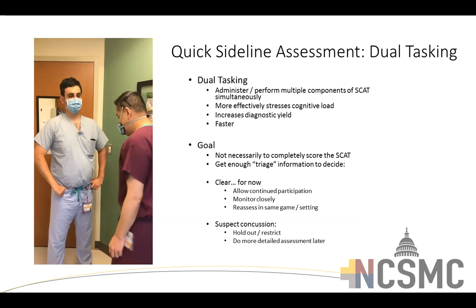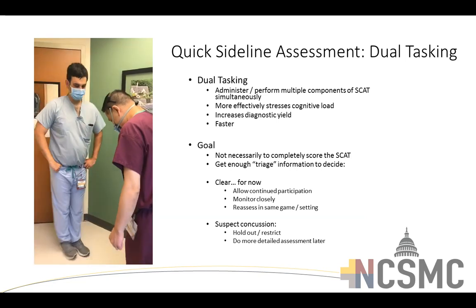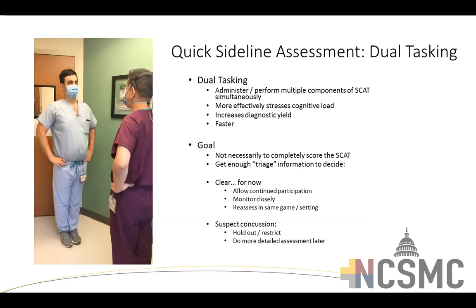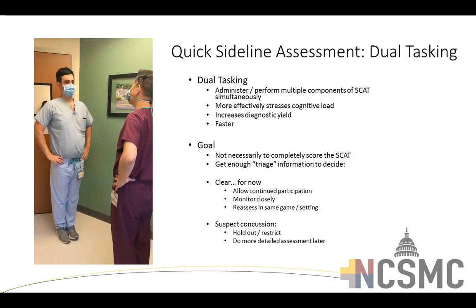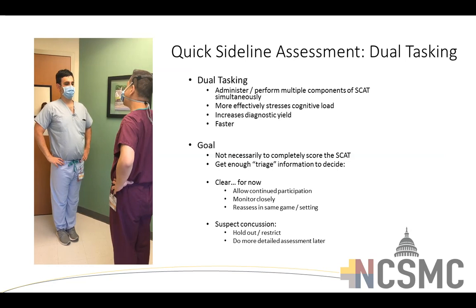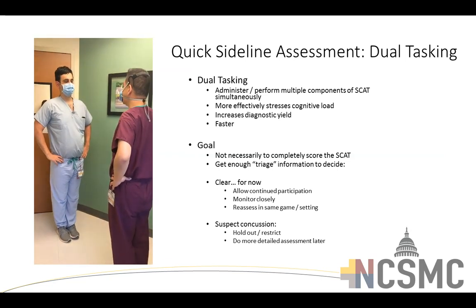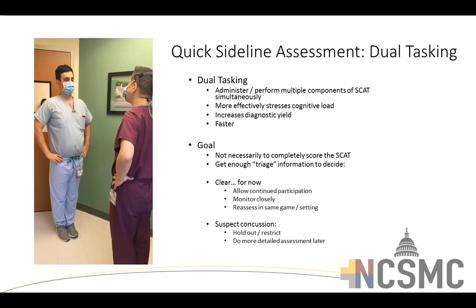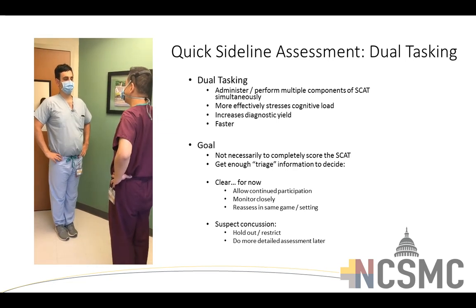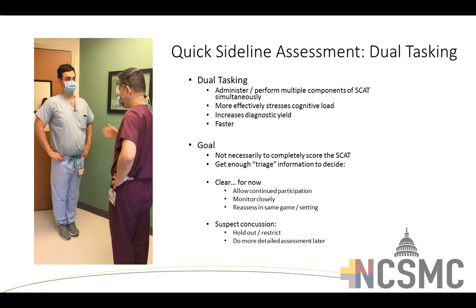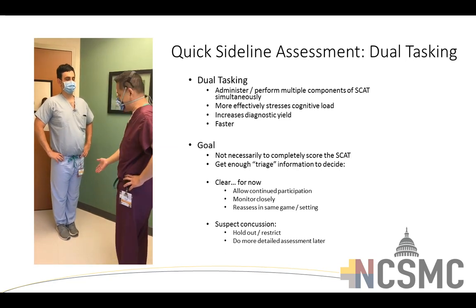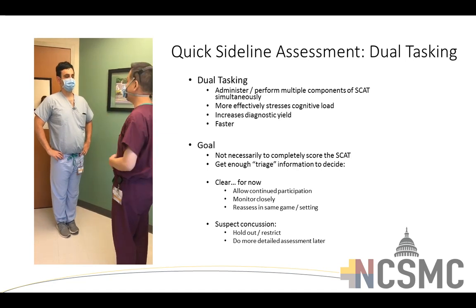Next, give five words for immediate recall — green, pencil, girl, apple, shoe — repeated several times, while simultaneously beginning the double-legged stance balance testing with eyes open, then eyes closed. This way, BEST balance testing is performed at the same time as immediate memory recall — further dual tasking. Lock those words away for delayed recall later.